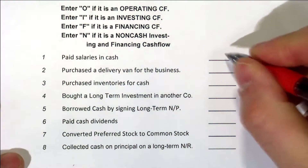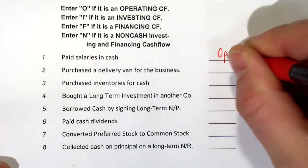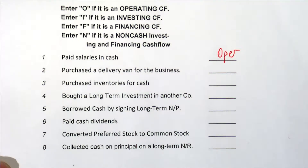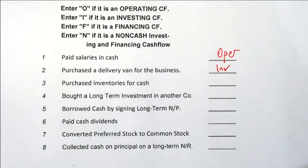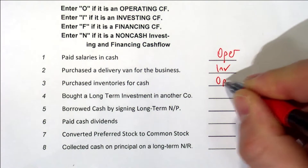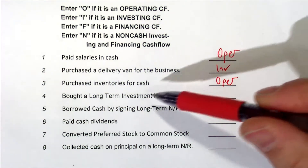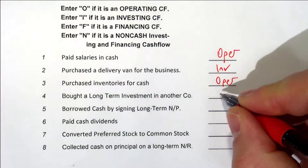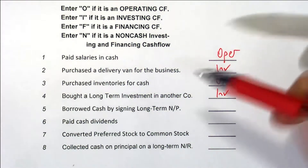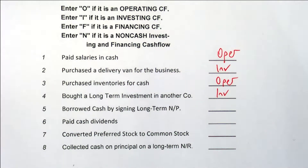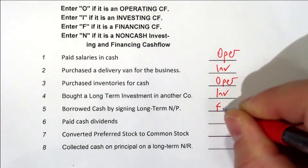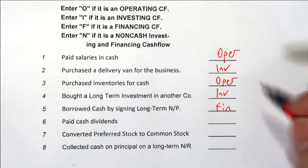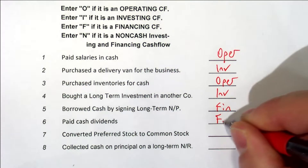Paid salaries in cash — that is an operating cash flow. Purchased a delivery van for the business — that is investing. Purchased inventories for cash — operating. Bought a long-term investment in another company — investing. Borrowed cash by signing a long-term note payable — financing. Paid cash dividends — that is also financing.